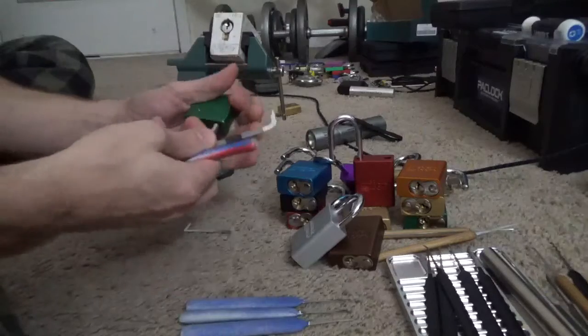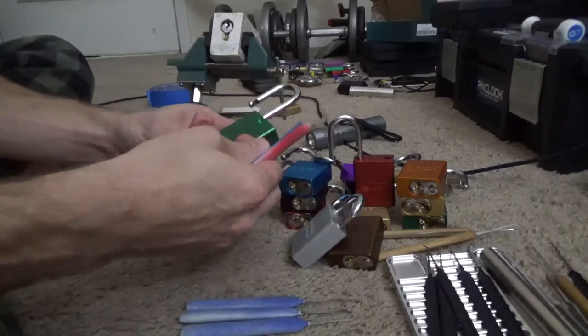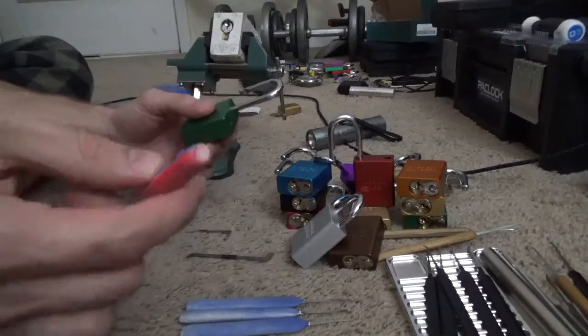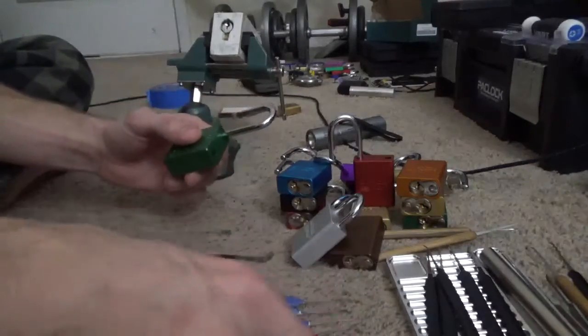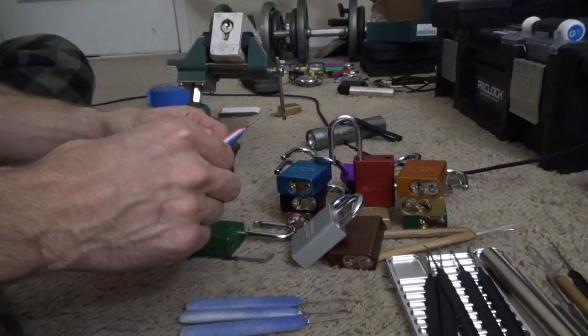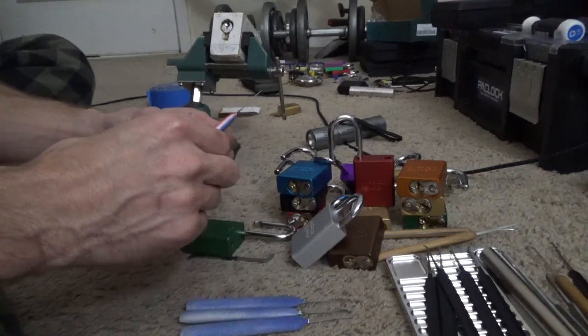And there we go. PacLock 90A. Not super easy but lots of fun. Oh, and we have our failure. Our first failure on the lockpick coating. So I need to re-evaluate what I'm doing there.